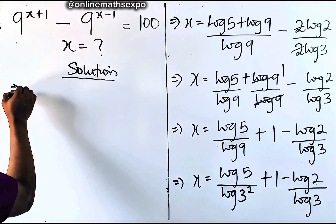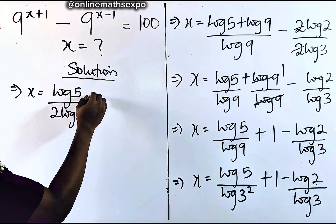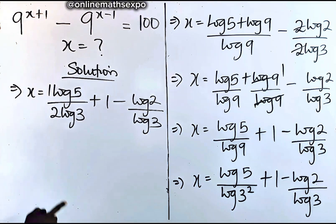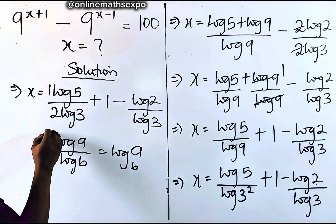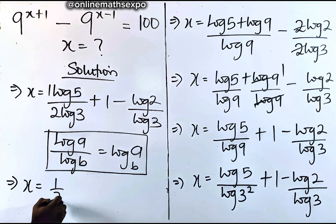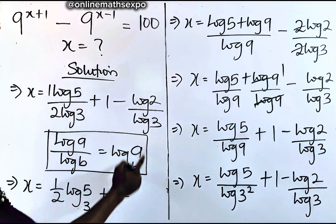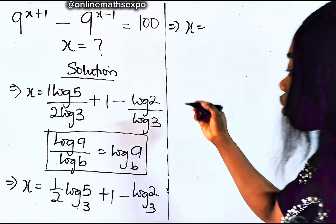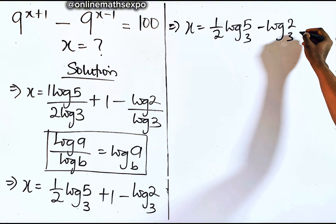This 9 is not yet simplified — 9 is 3 squared, so log of 5 divided by log of 3 squared, plus 1, minus log of 2 divided by log of 3. The power multiplies the log, giving log of 5 divided by 2 log 3. Remember for every log A divided by log B, it gives log A base B — the change of base rule. Applying this, x is equal to one-half log 5 base 3, plus 1, minus log 2 base 3.